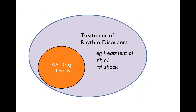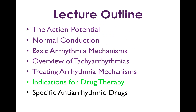This Venn diagram is just to remind us that antiarrhythmic drug therapy is a subset of the broader strategies to treat rhythm disorders. For example, treating ventricular fibrillation and ventricular tachycardia is nearly invariably done by shocking with electrical current. So those are the indications for drug therapy. The next video will go through the specific antiarrhythmic drugs we're going to be talking about in lecture.